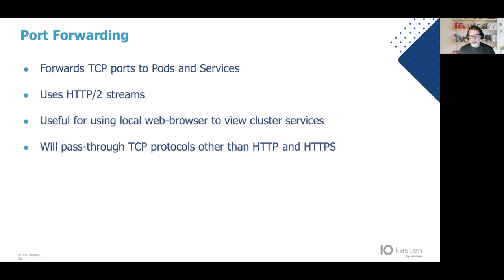That pretty much covers ways to access the API server using kubectl — either by the API server proxy or by using raw. There's another way of accessing your ports and services, and of course that's through port forwarding. I'm sure most of you have already used this. I'm going to give a brief overview of port forwarding for completeness and discuss a couple of limitations. Port forwarding forwards TCP ports to pods and services — specifically containers. It can only do TCP; it can't do UDP. It uses HTTP/2 streams to do this, which can create some difficulty if you have a reverse proxy between you and the server you're trying to access.